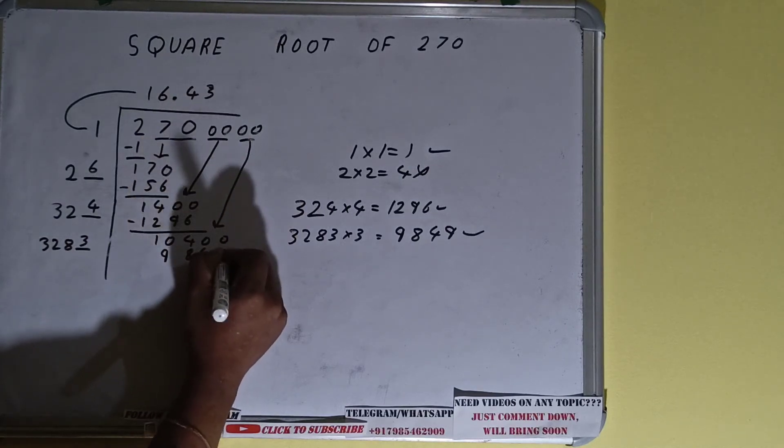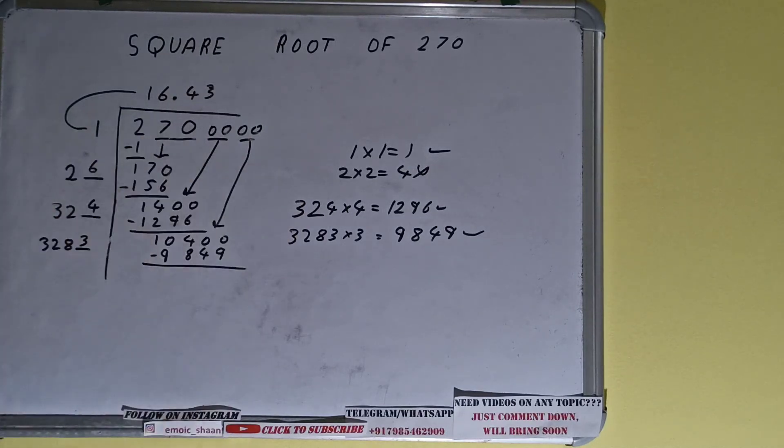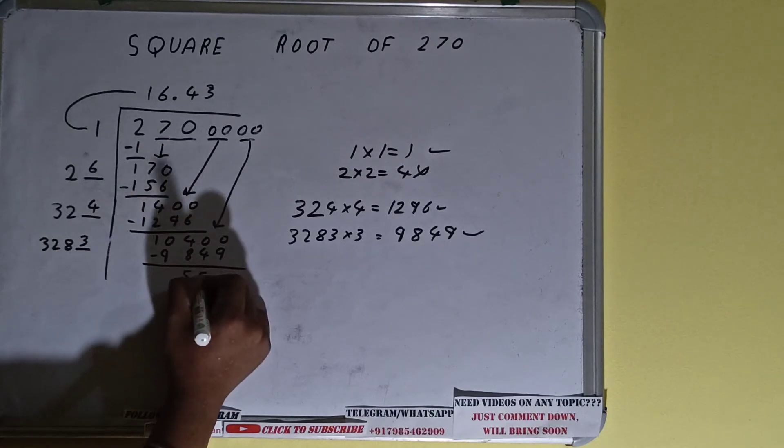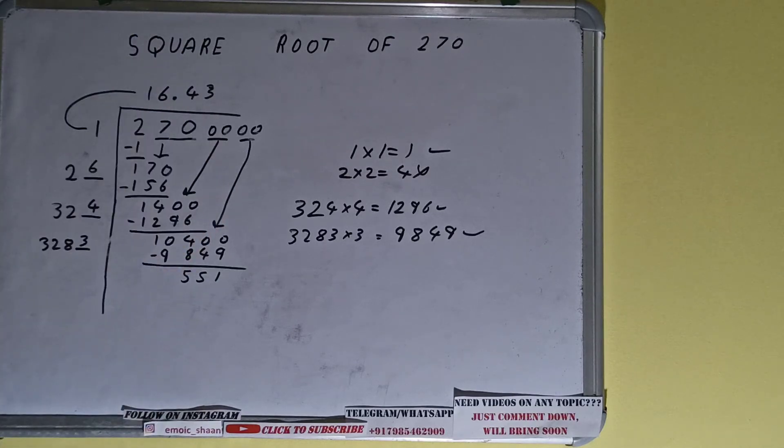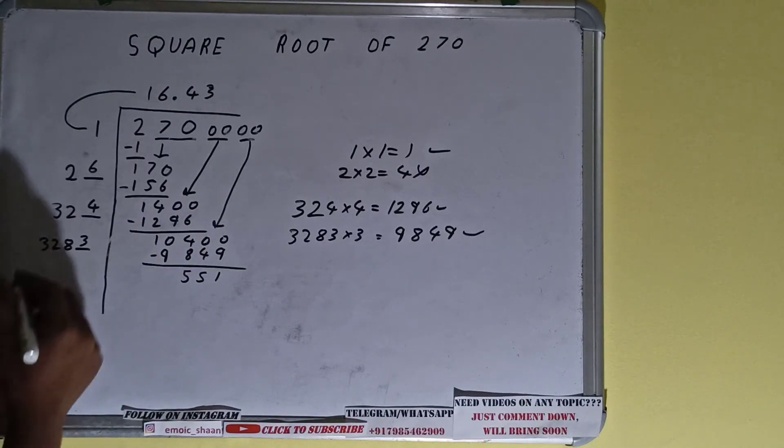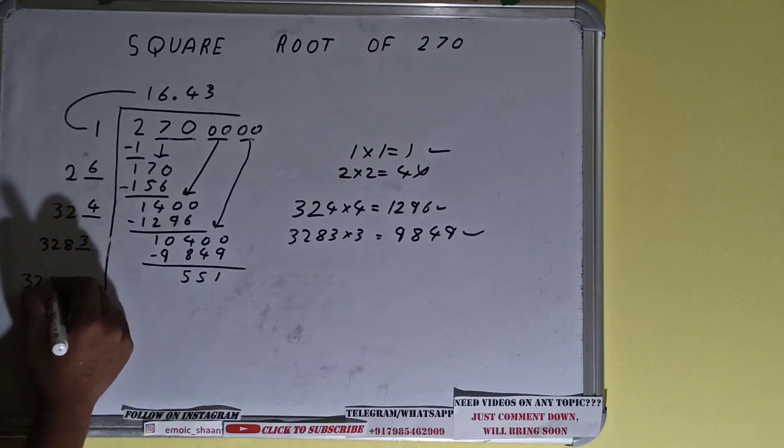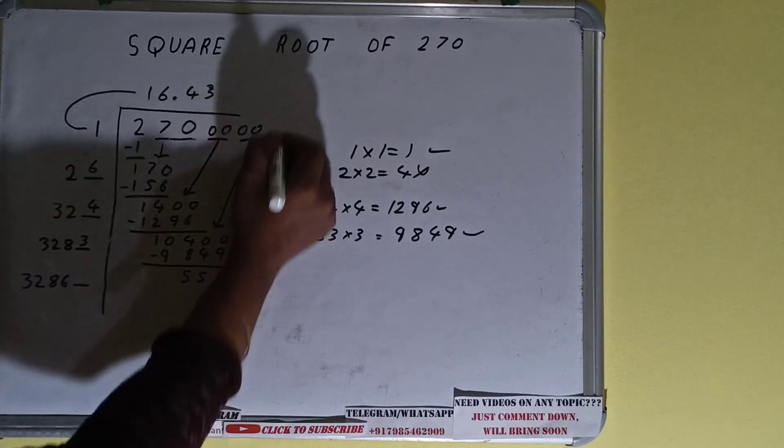Subtract it. 551 will be left. Now 3283 into three we did, right? So add both. So 3283 plus 3 will be 3286 and one digit extra.